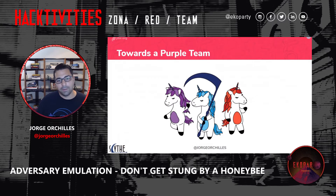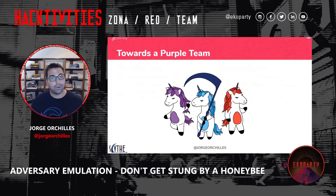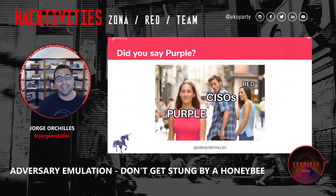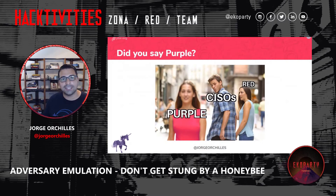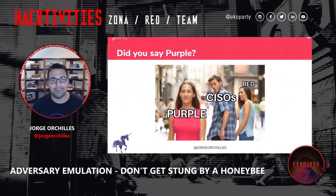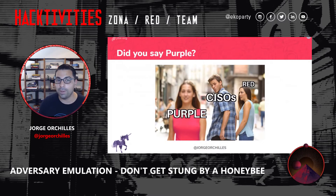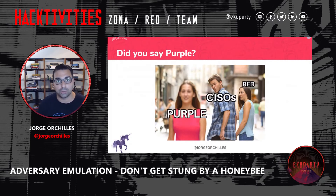Purple teaming is really bringing red and blue teams together. You can do purple teaming whether you have an external or internal red team — you just need someone to play the role of a red team. The difference is that you're working together. Purple is getting a lot of visibility — it's the new hotness. And it's not because it's a new color; we came up with a new term and it's purple because red and blue make purple. It's not sexy because it's a new term — it's because of the business value it provides.